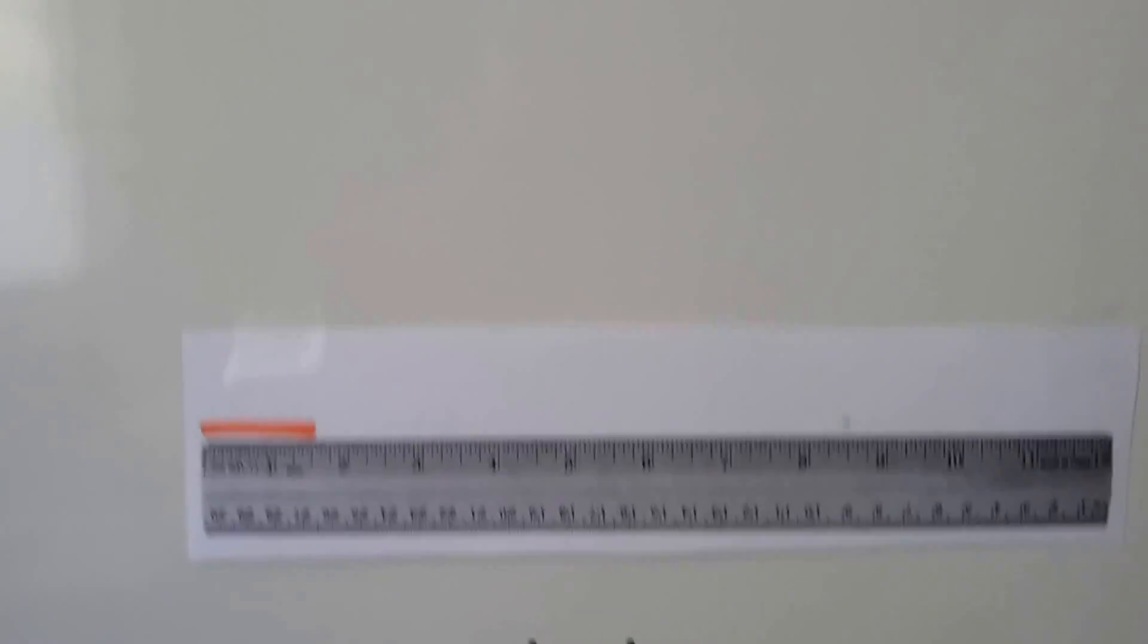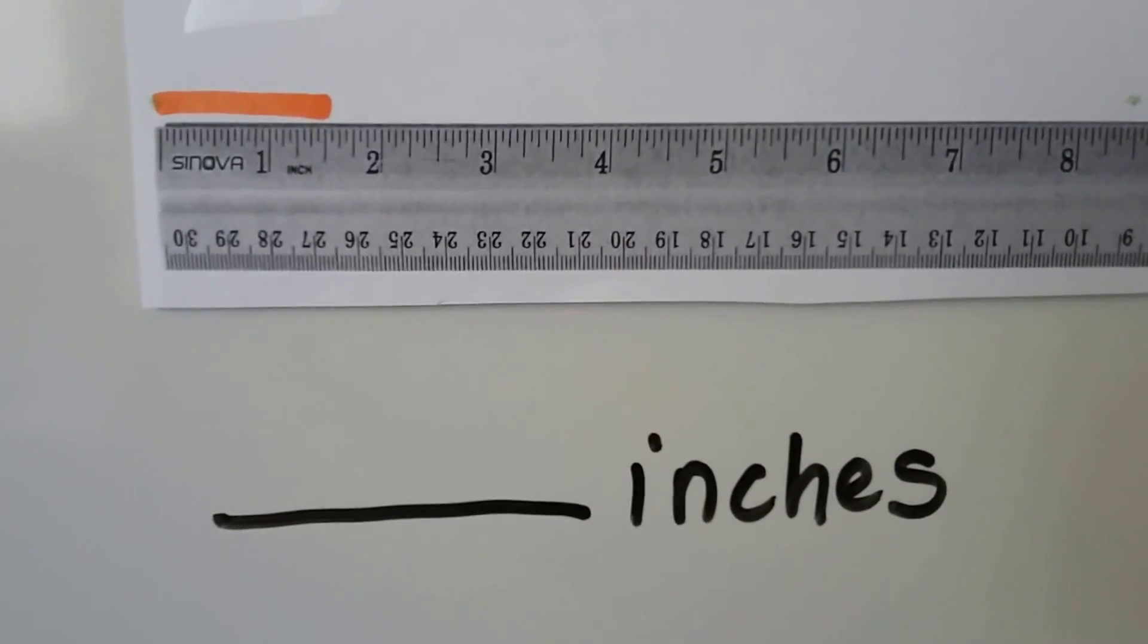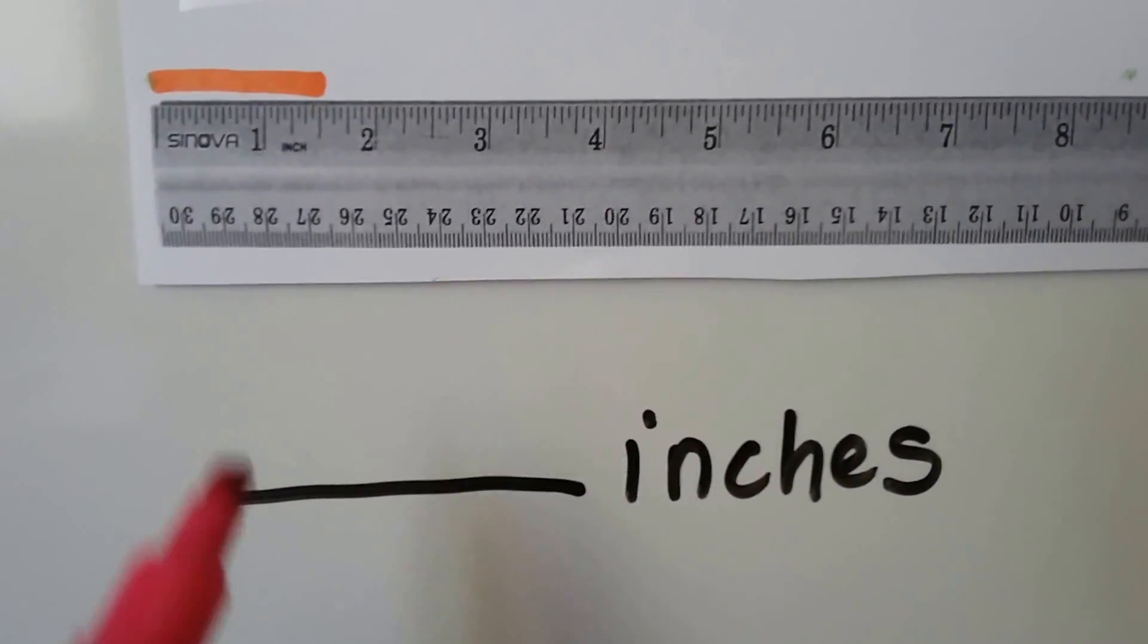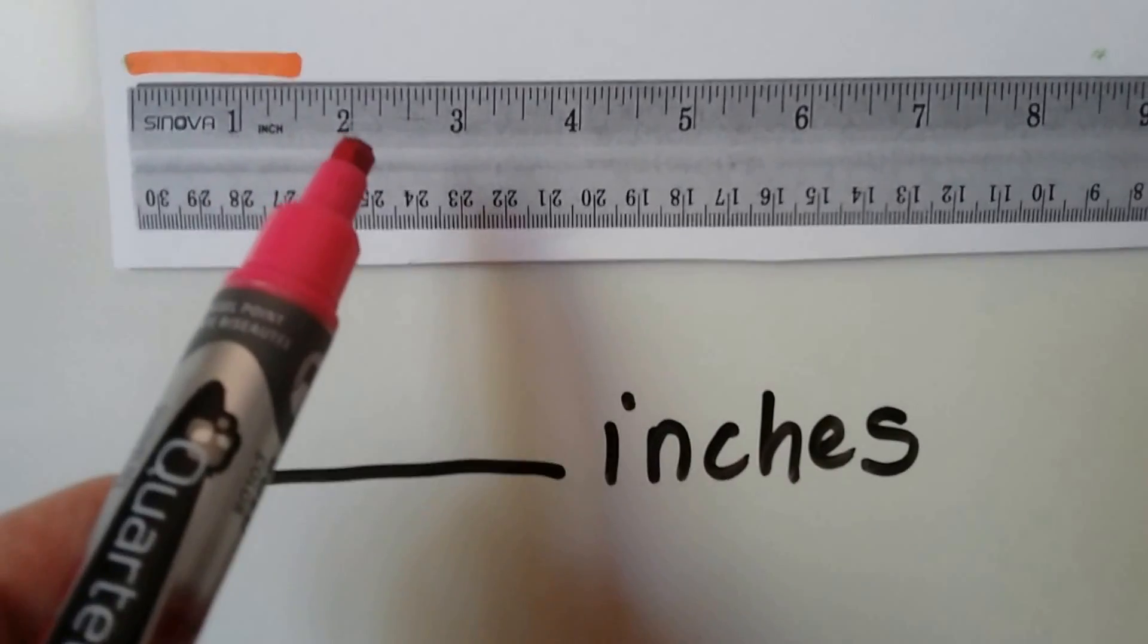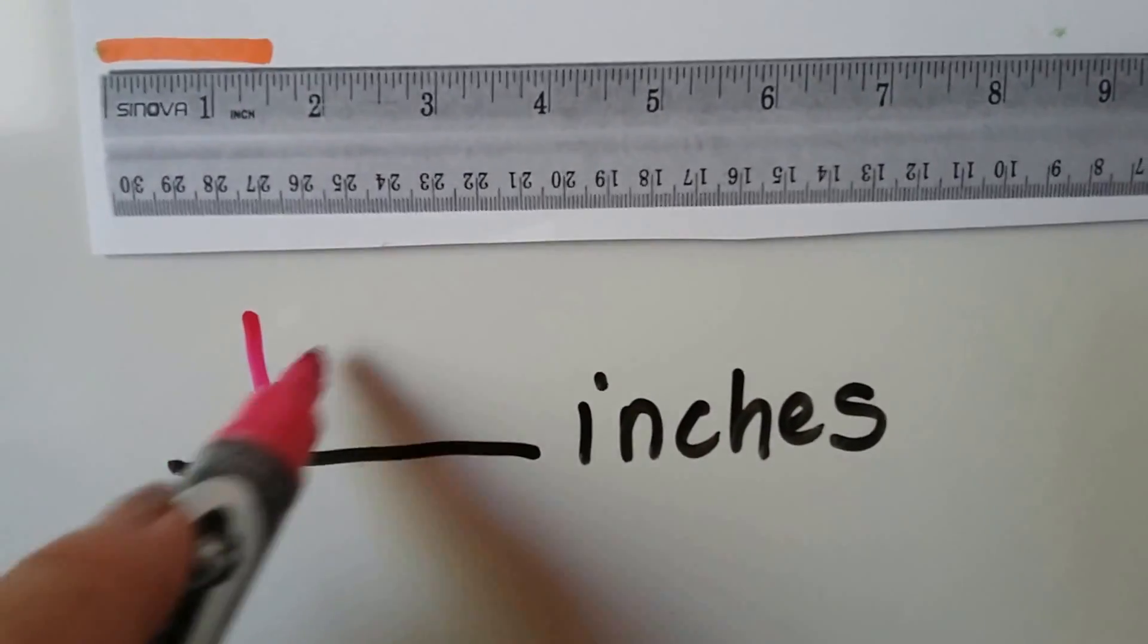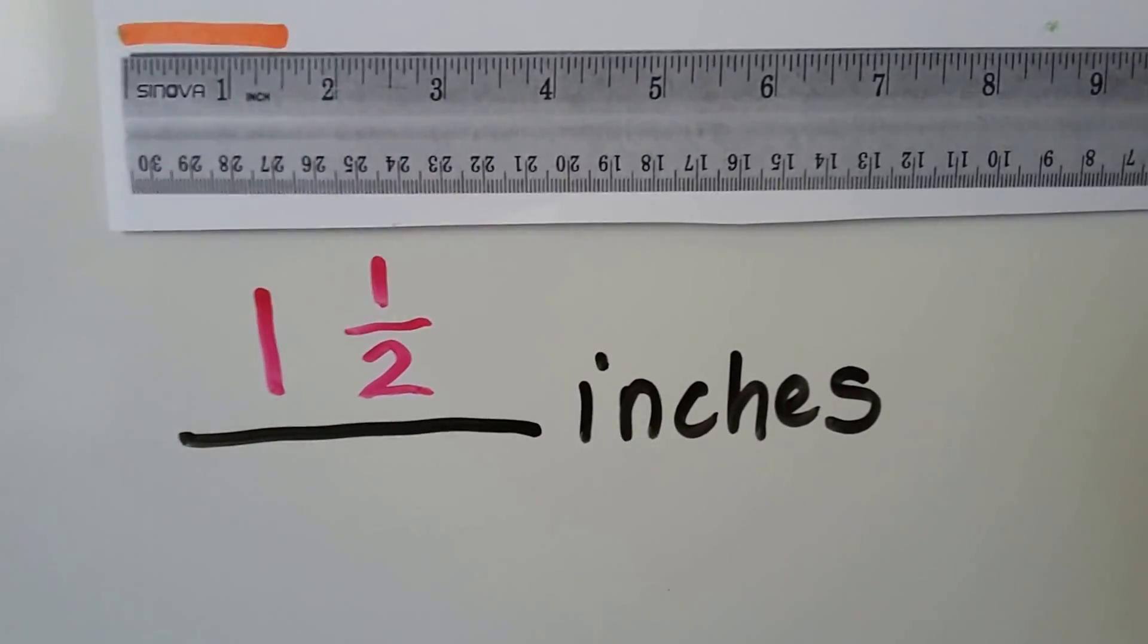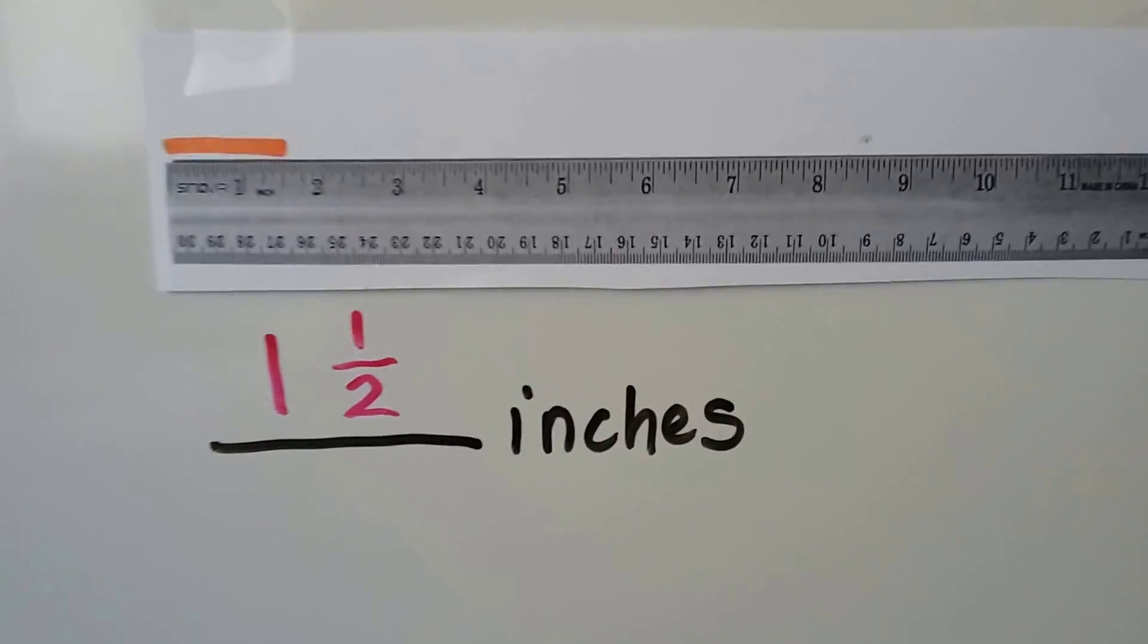All right, let's try this one. Can you tell how long that orange line is? It passed the one. It didn't get to the two yet. It's right in the middle, so it's one and a half.